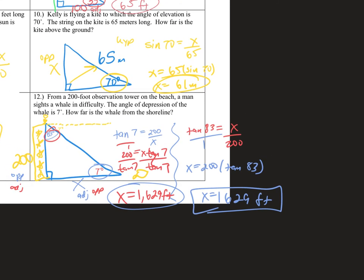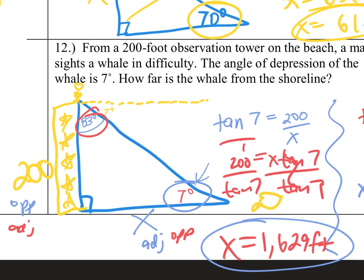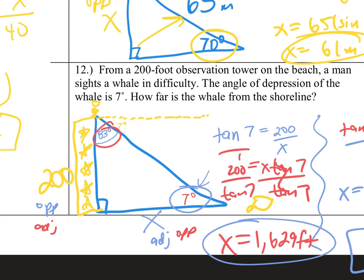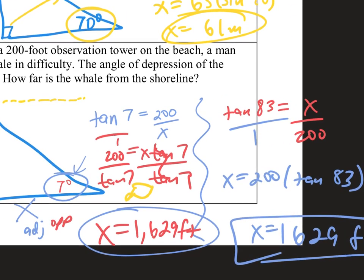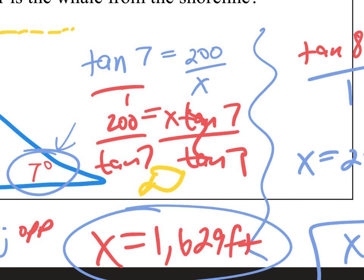Angle of depression is not any harder. It just depends on how you want to look at it. You can use your angle of depression as the angle of elevation — you just have to make sure you put it in the right spot — or you can do 90 minus. I would draw my right triangle the exact same way every time and put the angle of elevation or depression in the exact same spot. That will work every time.